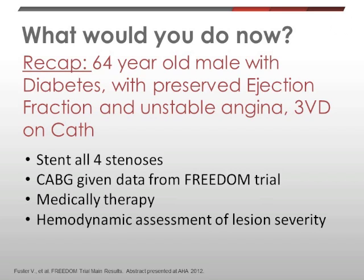So the question now is, what is the best approach? One can proceed and do PCI to all of these lesions. Bypass is an option, in particular given the recent data from the FREEDOM trial. We could do nothing and treat the patient medically, at least initially. Or one can also consider hemodynamic assessment of lesion severity with FFR to really figure out which of those lesions, if any, cause a problem in terms of ischemia.